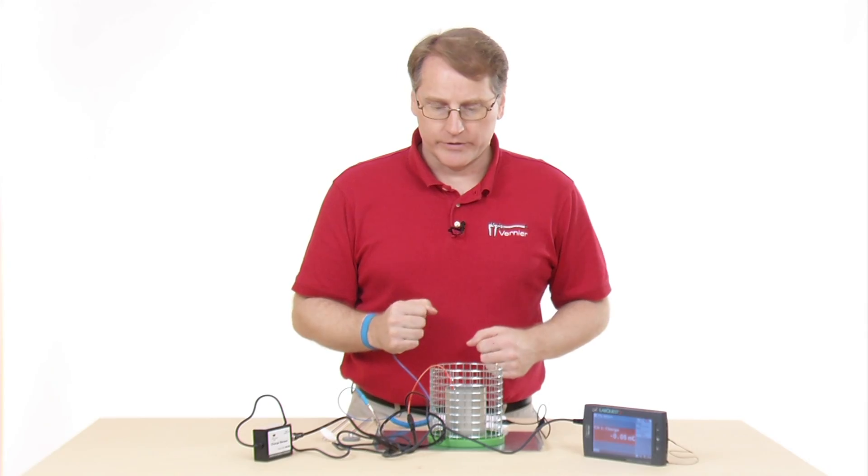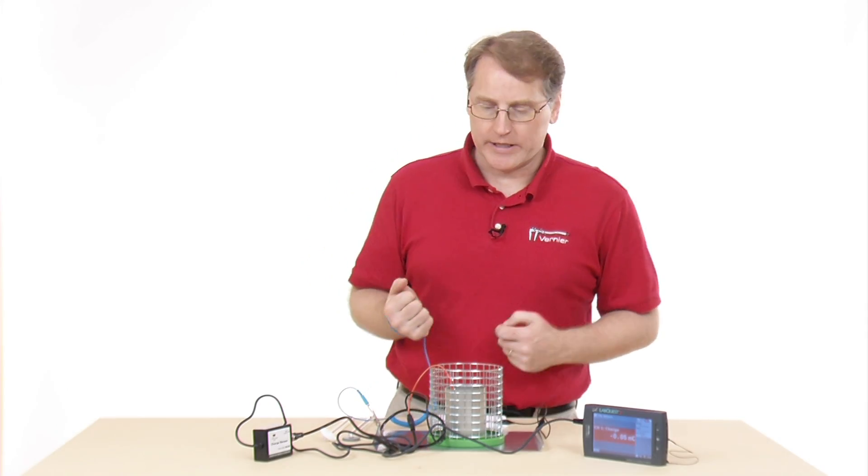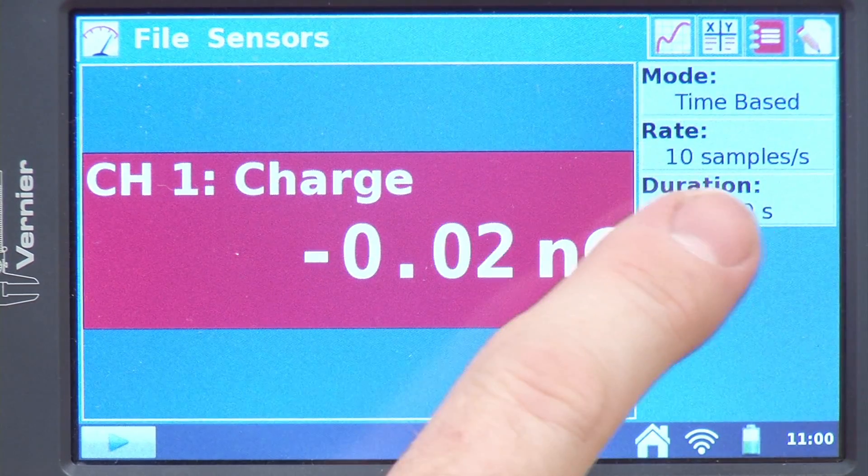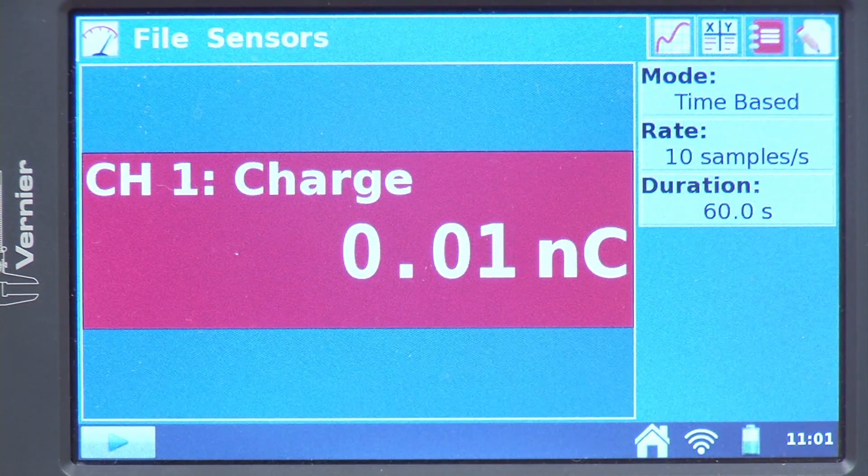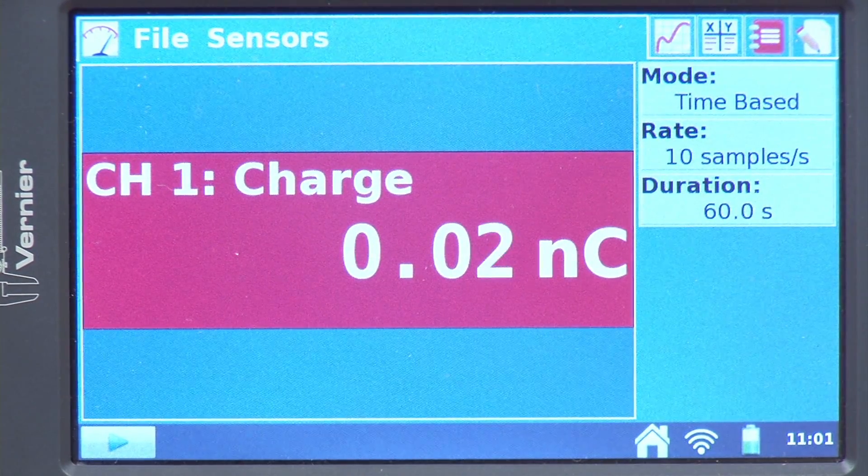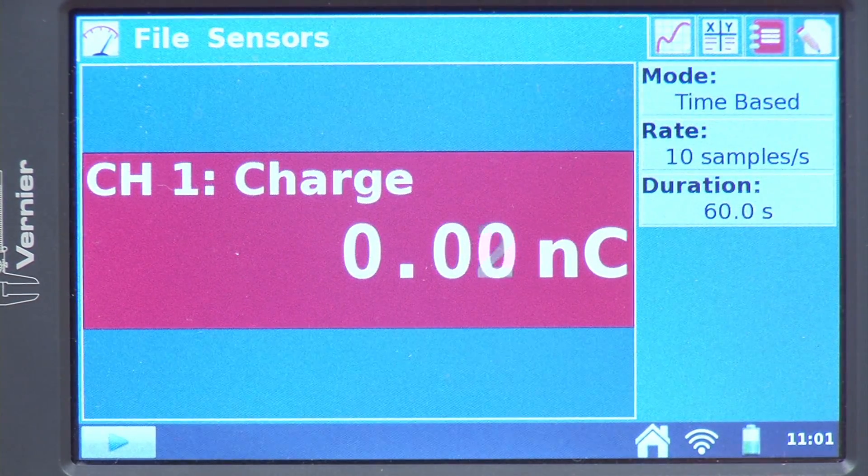So that I don't inadvertently charge things that I don't intend to. I need to set up the LabQuest, and I'm just going to leave the default time setting for this experiment, which would be 10 samples per second for 60 seconds.